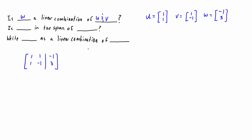When solving problems like this, we're looking for an expression: c1 times u plus c2 times v equals w. If you had more than two vectors you would just have additional c terms. These c's are just scalars — scalars times vectors equal to another vector is the definition of a linear combination. If we can find such c1 and c2, then w is a linear combination of u and v.